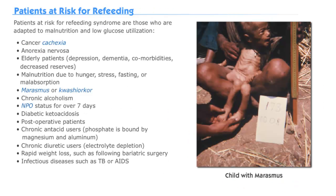Let's now take a look at the patients at risk for refeeding syndrome. Common characteristics of these patients include adaptation to malnutrition and low-glucose utilization. A third of all enterally-fed cancer patients experience refeeding syndrome.